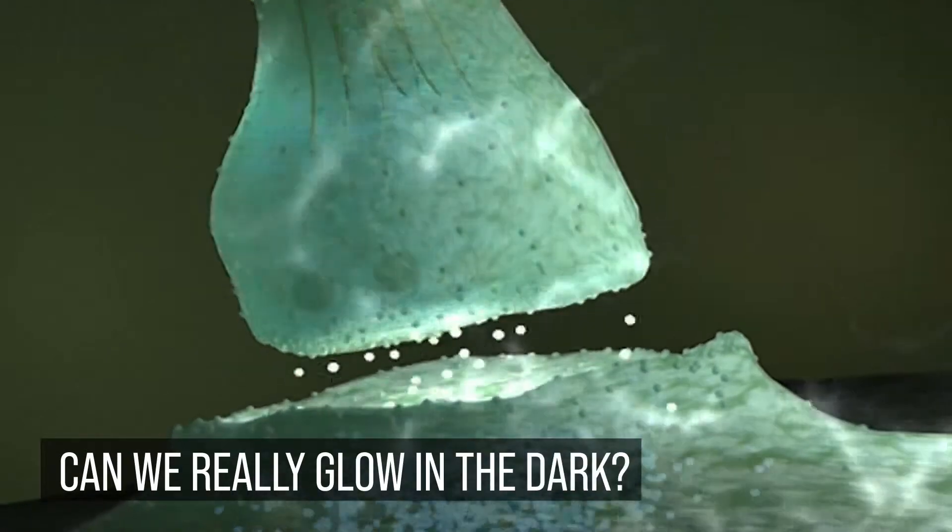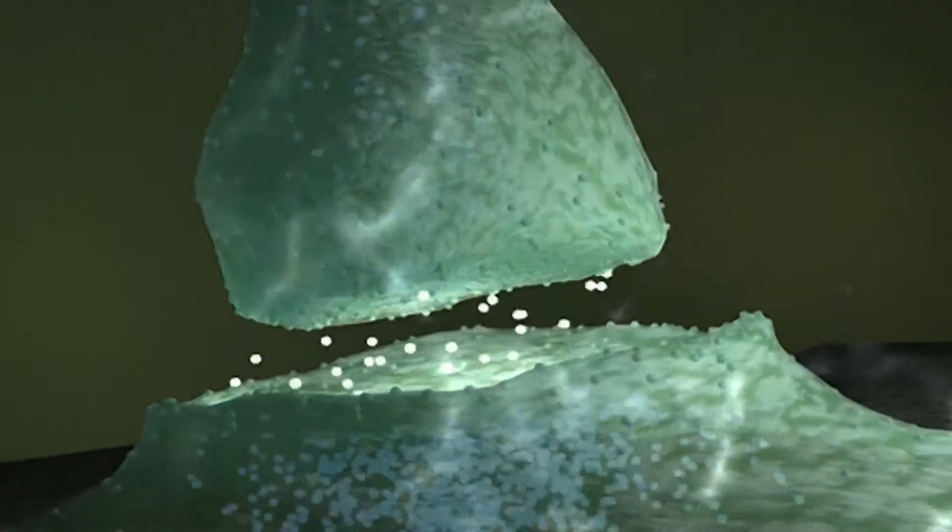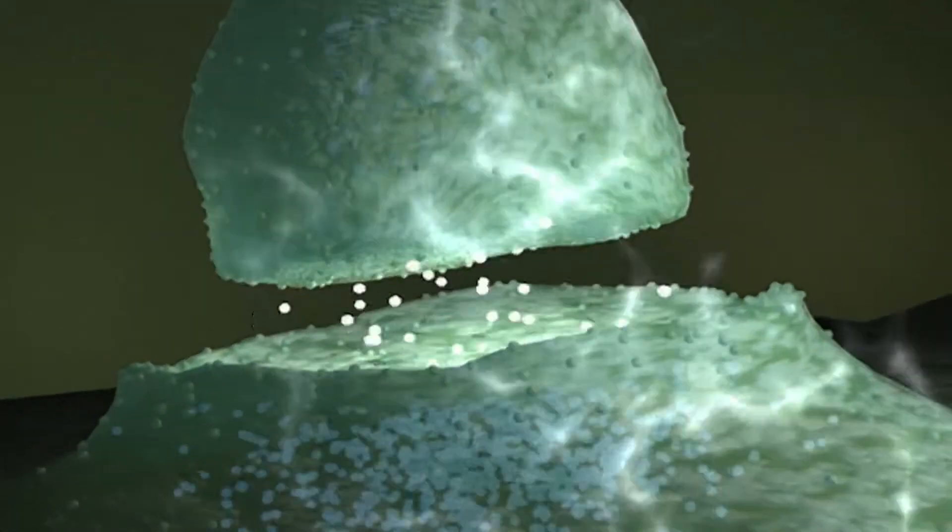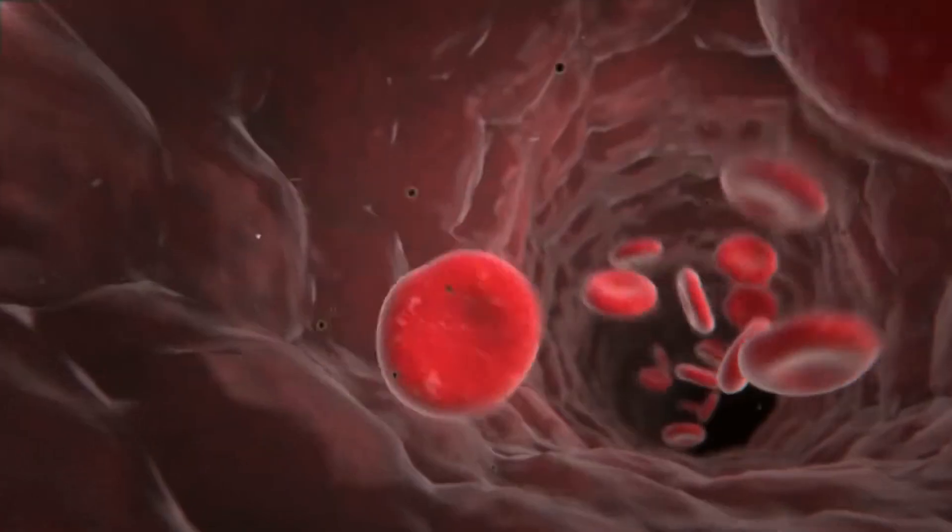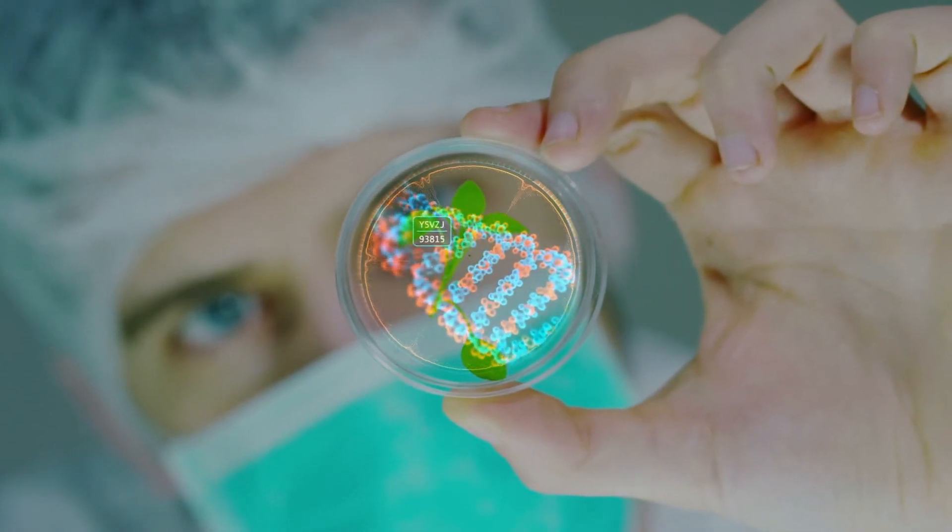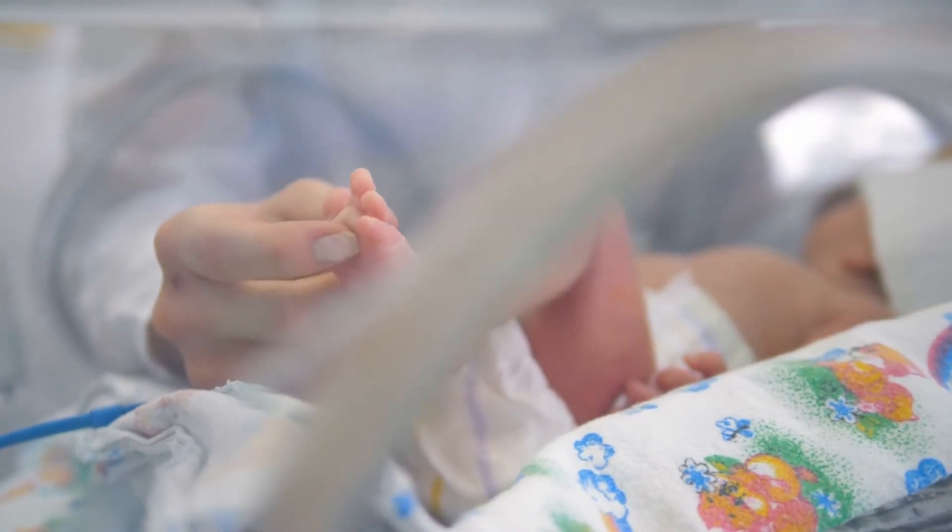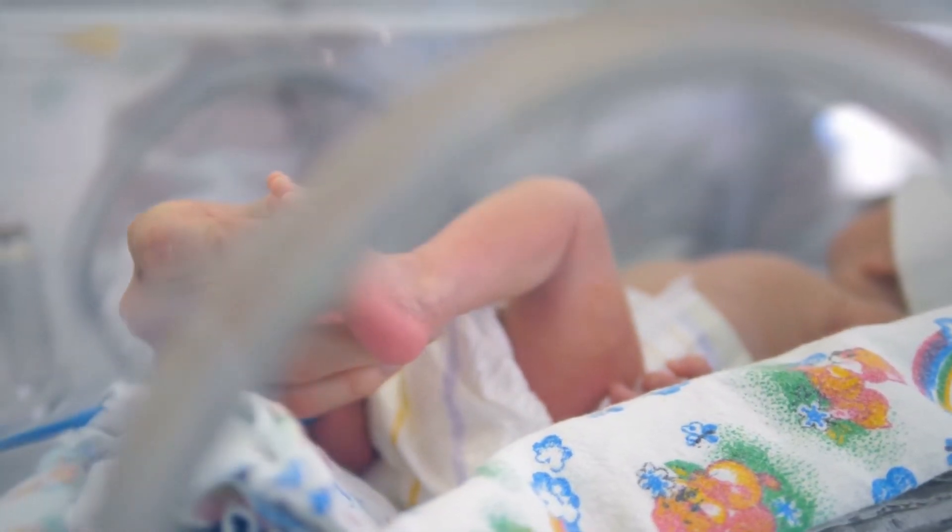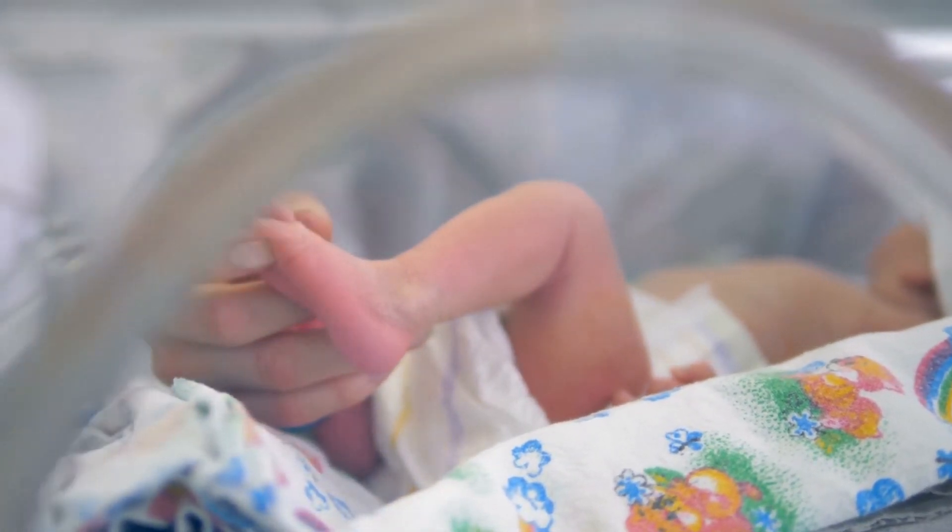Can we really glow in the dark, have four arms, or develop superpowers by being exposed to radiation? Unfortunately, no. Radiation can alter DNA, but the result is rather chaotic. It is commonly the newborns who are affected, and who can suffer huge abnormalities in the womb of their mother.